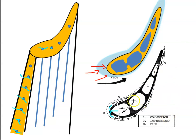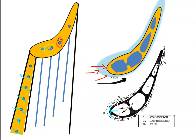So the three methods are: convection, where cool airflow comes up through the blade; impingement, where the air is blasted onto the leading edge and trailing edge of the blade; and film cooling, where air leaks out through the dust holes and provides a protective film of cool air around the blade.